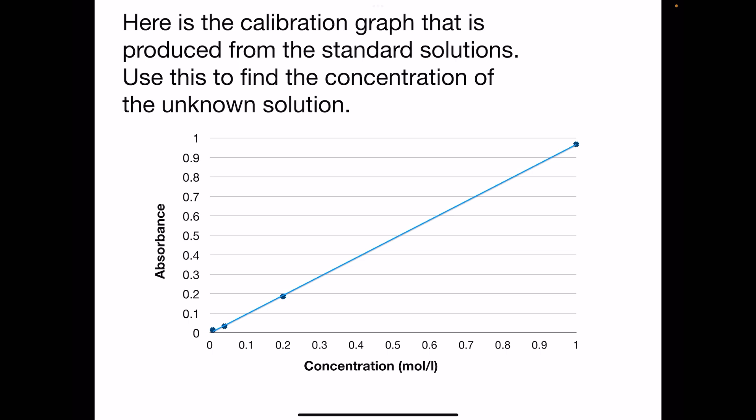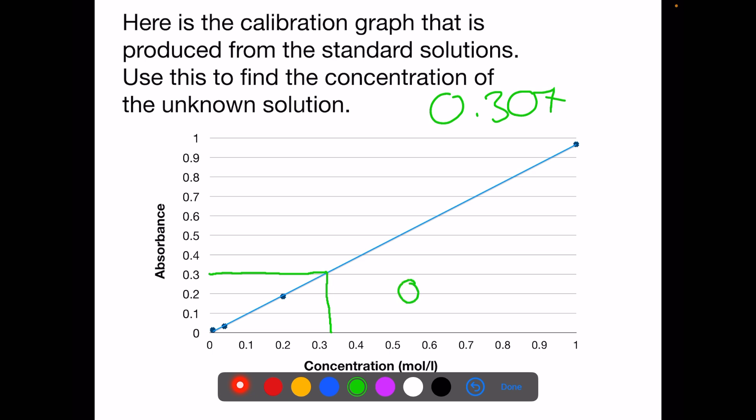The unknown solution had an absorbance of 0.307. If we have a look at the calibration graph and we go across at this value until we hit the line, we can then trace this down to find what the concentration would be. Based off this graph, I would estimate that the concentration is going to be around 0.32 moles per liter.